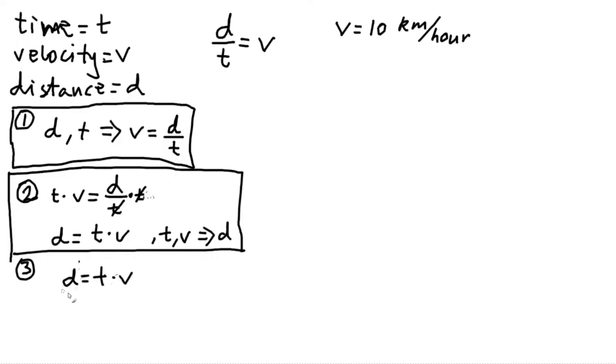And start with the equation that we had here. So distance equal to time times velocity. Now if we take this equation and divide by velocity on both sides, then the velocities cancel out. And we're left with time is equal to distance divided by velocity. So in other words, if we know the distance and we know the velocity, then we can calculate the time it took the object to travel the distance at that velocity.